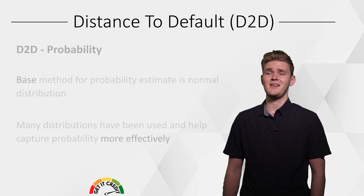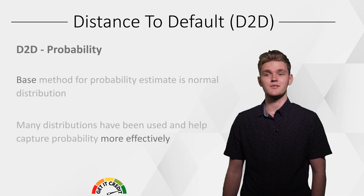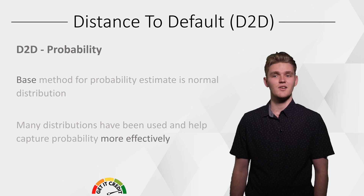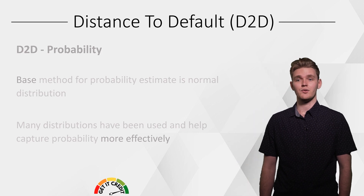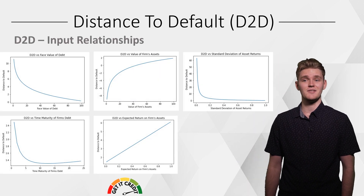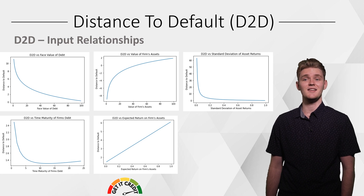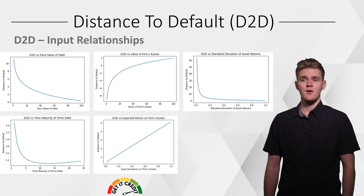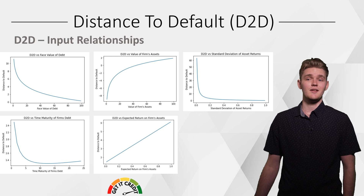Using the normal distribution for probability of default is a base method. Many companies use hybrid distributions to account for the fat tail on the default side. The relationships of the D2D inputs can be seen here, with each input on the x-axis and the D2D on the y-axis.